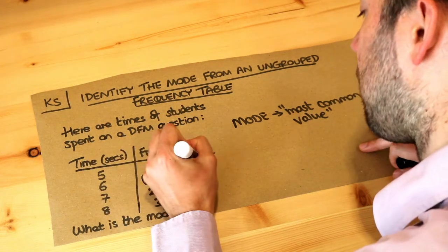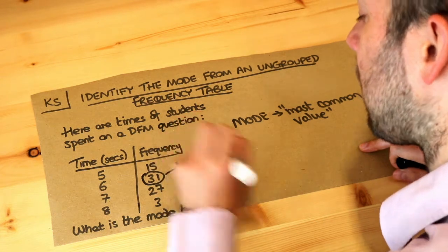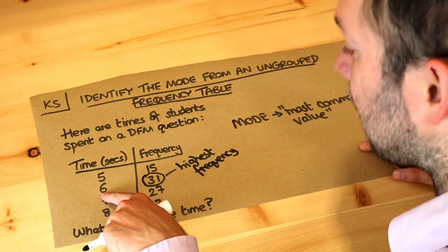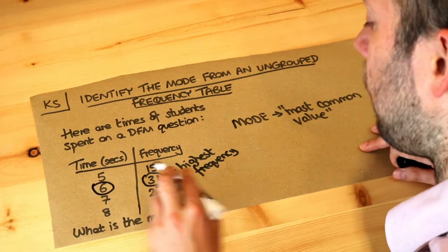But that's not the answer. 31 is not the answer. That's just how many times that particular value occurred, which is 6. So it's the 6 that we want, the value on the left.